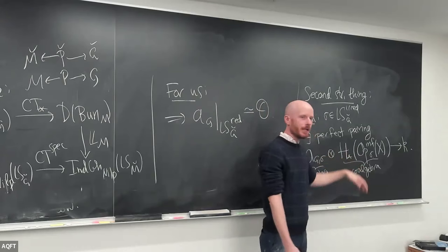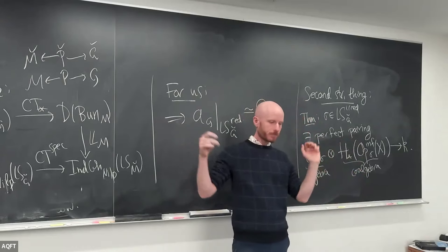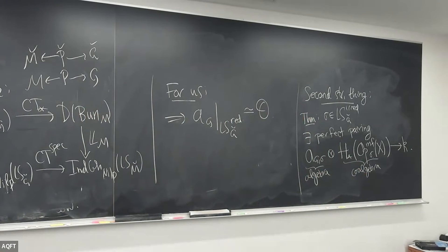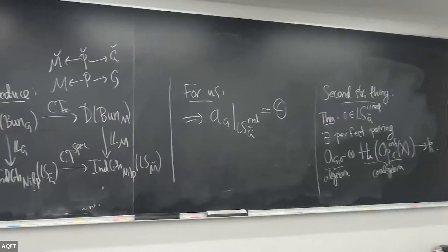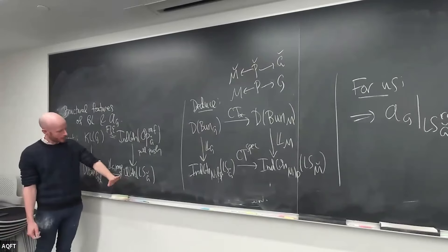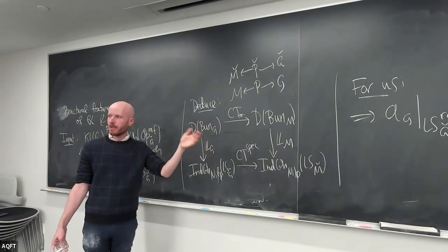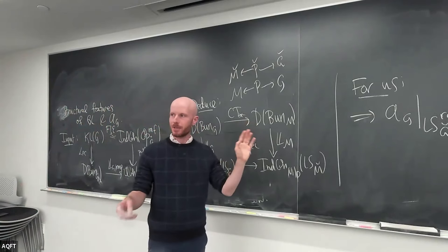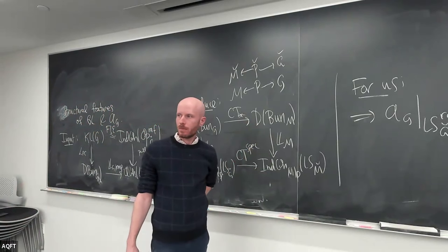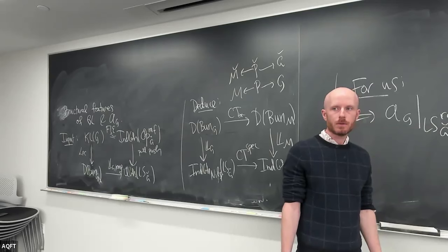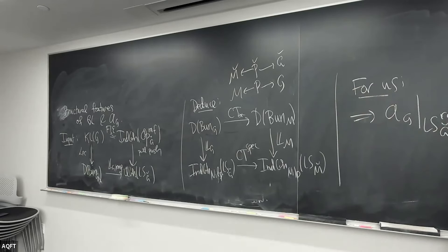There's another version of this statement where instead of homology I take global sections of the dualizing sheaf — something coherent — and if you wrote that, it would be literally what you get by tracing through the Kac-Moody localization. Then there's a second theorem, which is that global sections of the dualizing sheaf is the same as topological homology, related to the fact that these spaces of rational maps are contractible. So you could have formulated the pre-theorem with the dualizing sheaf, and then this would be a little easier to see.